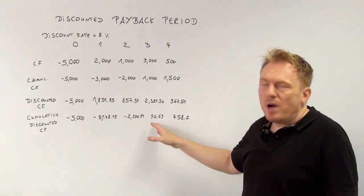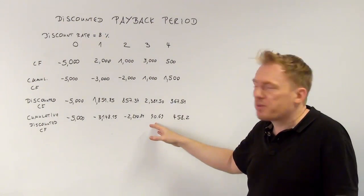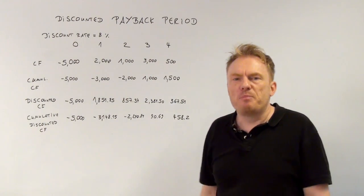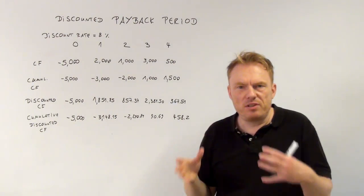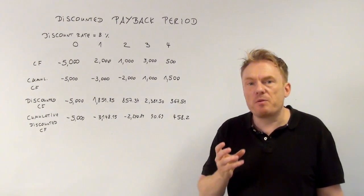you need to wait three periods, you need to wait for three periods to get a positive sum, to get a positive cumulative discounted cash flow for the very first time.